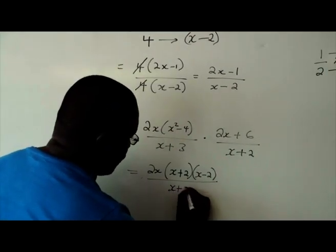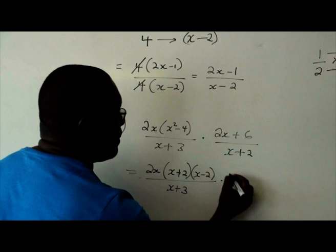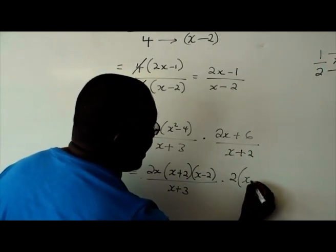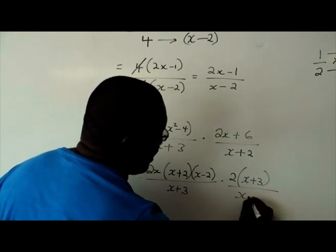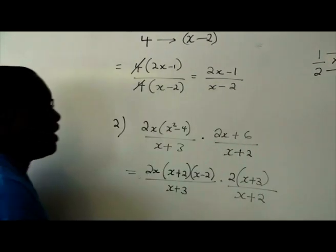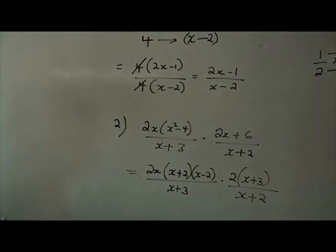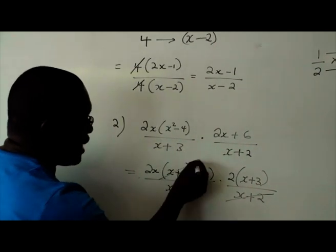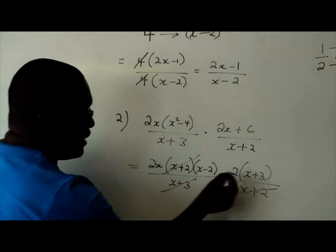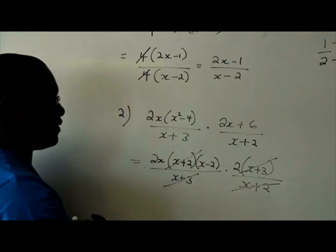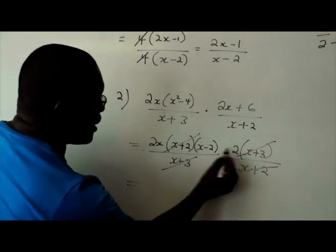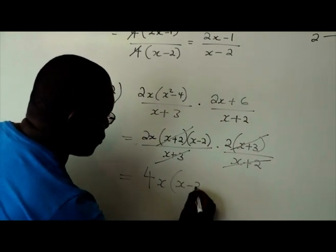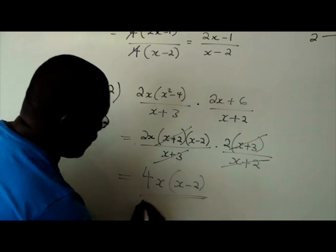Divided by x plus 3 multiplied by... There's a common factor right there. So it's going to be 2 multiplied by x plus 3 over x plus 2. Now, just for inspection, you can see that this x plus 2 cancels with that one. The x plus 3 cancels with that one such that the remaining is 2 times 2 which is 4, x, and that x minus 2. This would be your final answer.